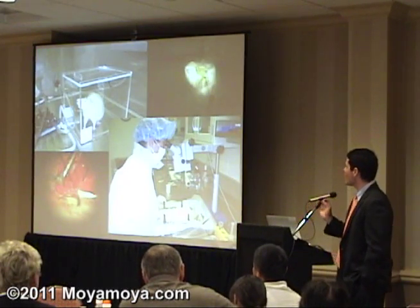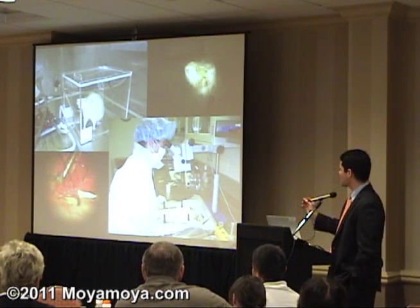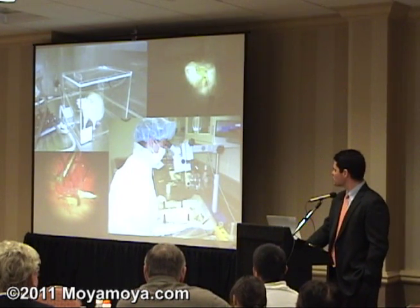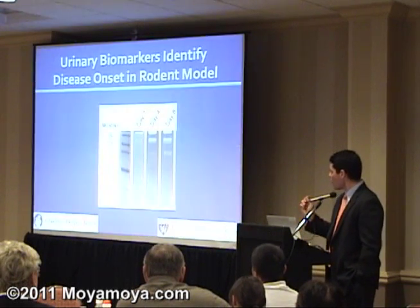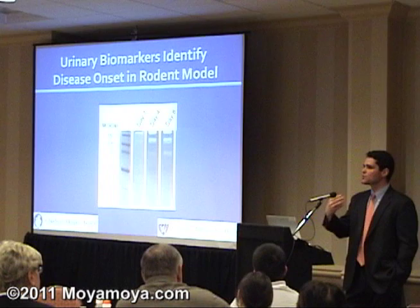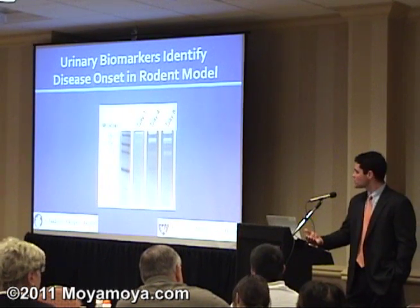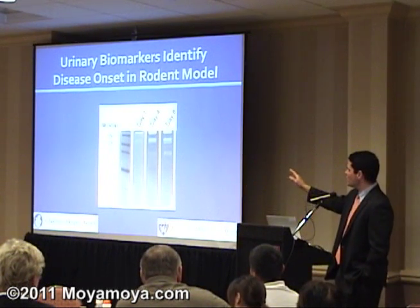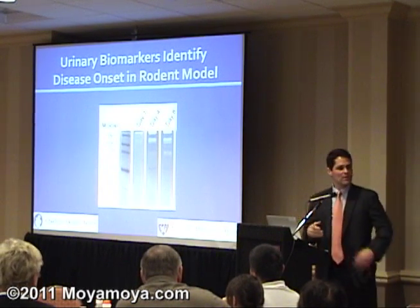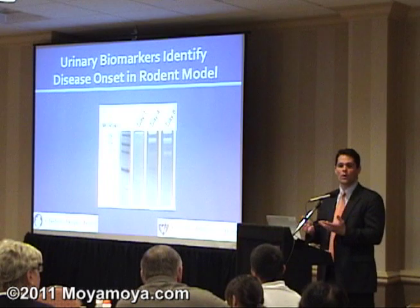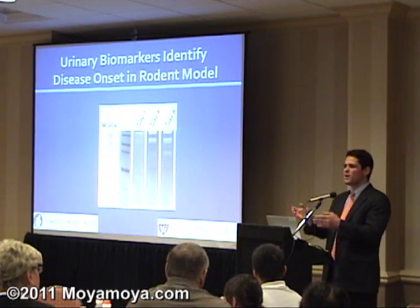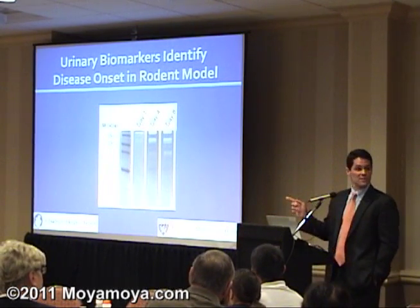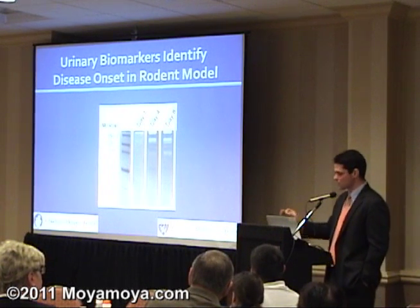We now have an animal model of moya-moya in rats. What we do is create a model of moya-moya in these rats and then try to operate on them. One thing we found is that when the moya-moya comes on gradually over time, as the ischemia gets worse, we can check the urine of these animals over time and see that happening with our urine tests. We can't do that in people — there's no ethical way — but we're able to do that now in animals. It allows us to study them in a way we can't do with people, and we're pretty excited about this.